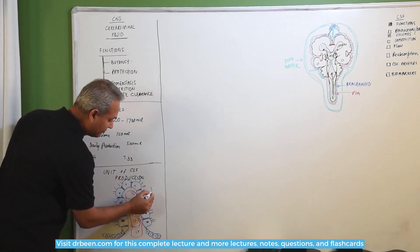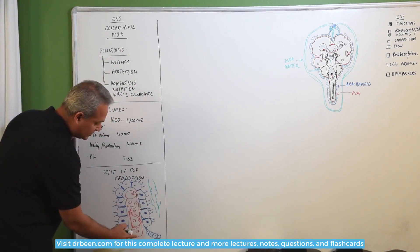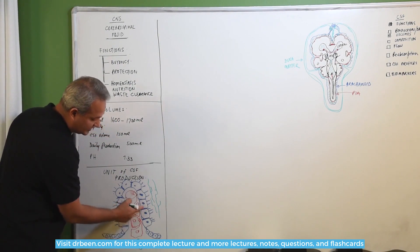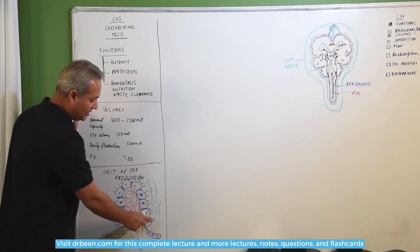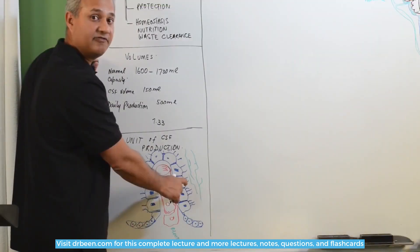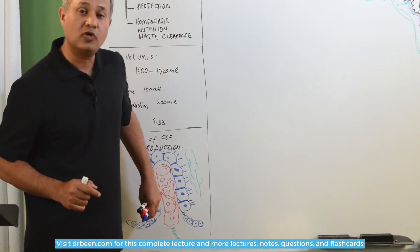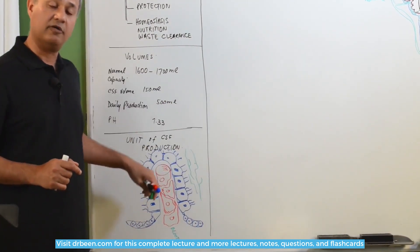This side is all CSF. This side is blood. If you see this cell, the ependymal cell that has become cuboidal, on one side it has the blood, on the other side it has the CSF. This is the blood CSF barrier, and this barrier has to make sure that no unwanted substances go into the CSF or come out of the CSF.